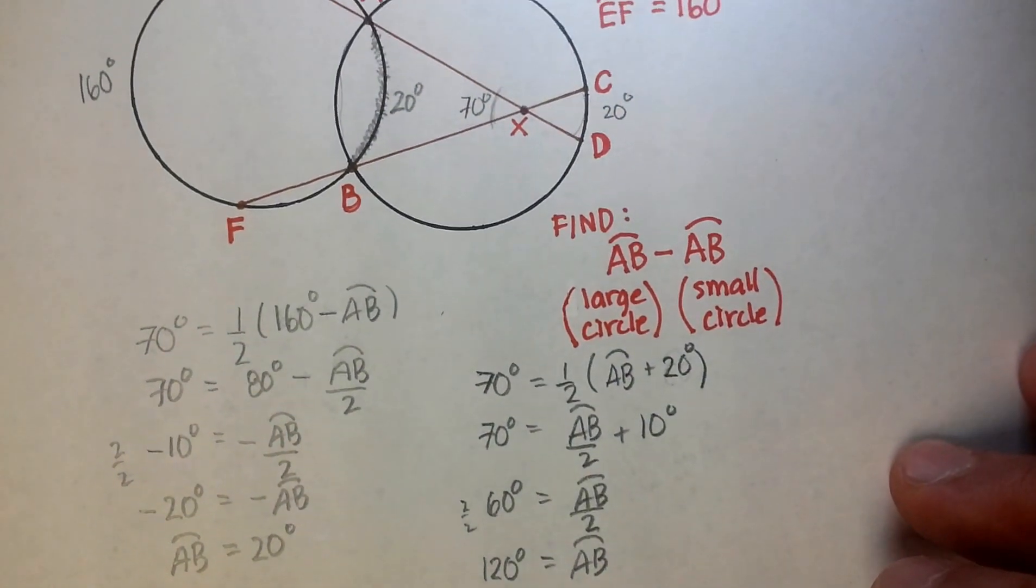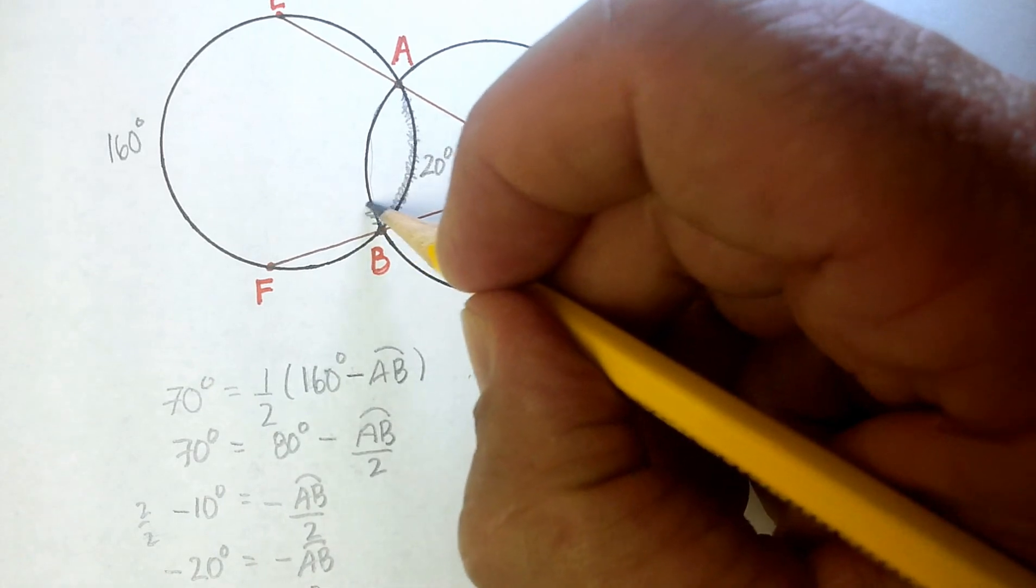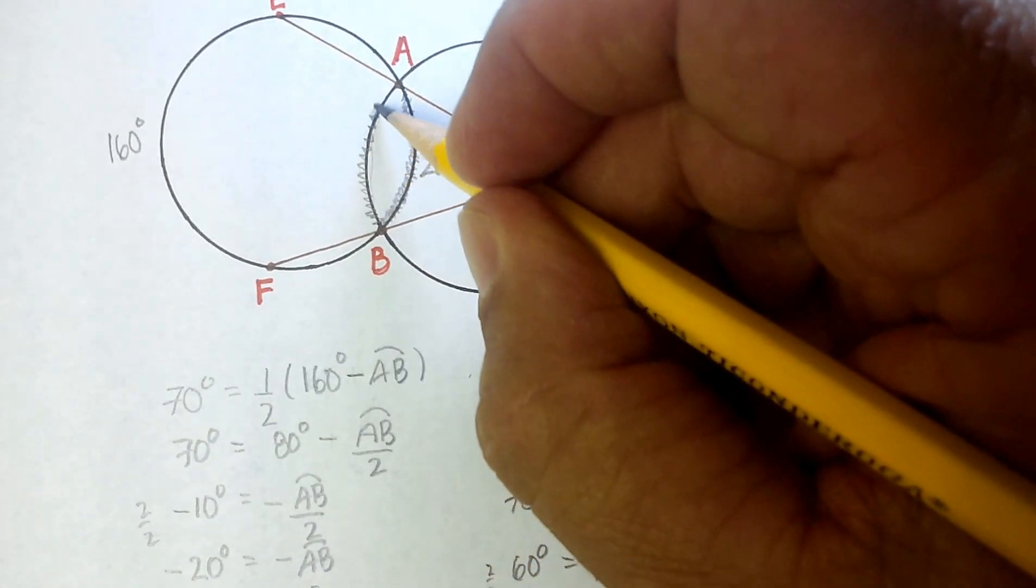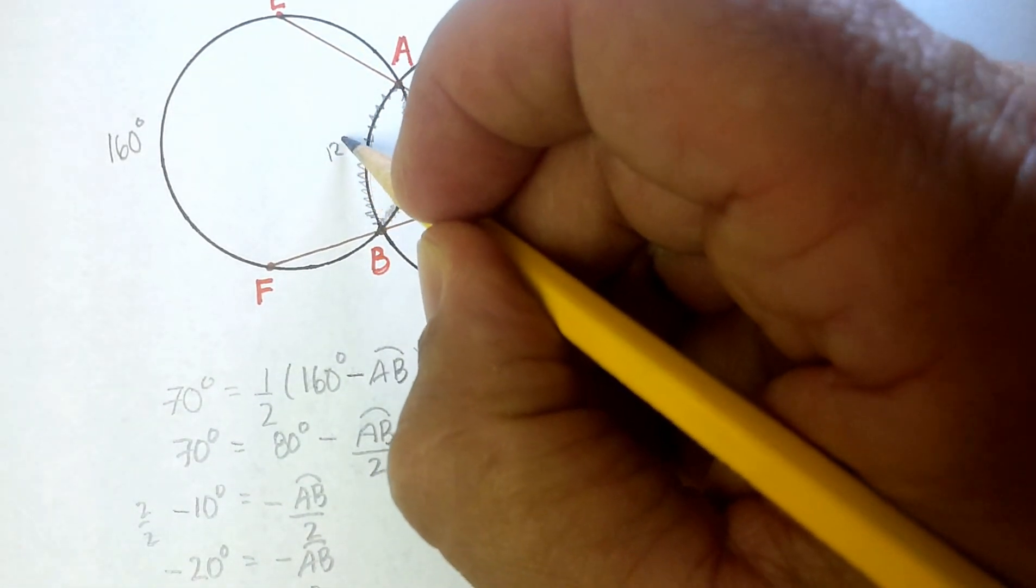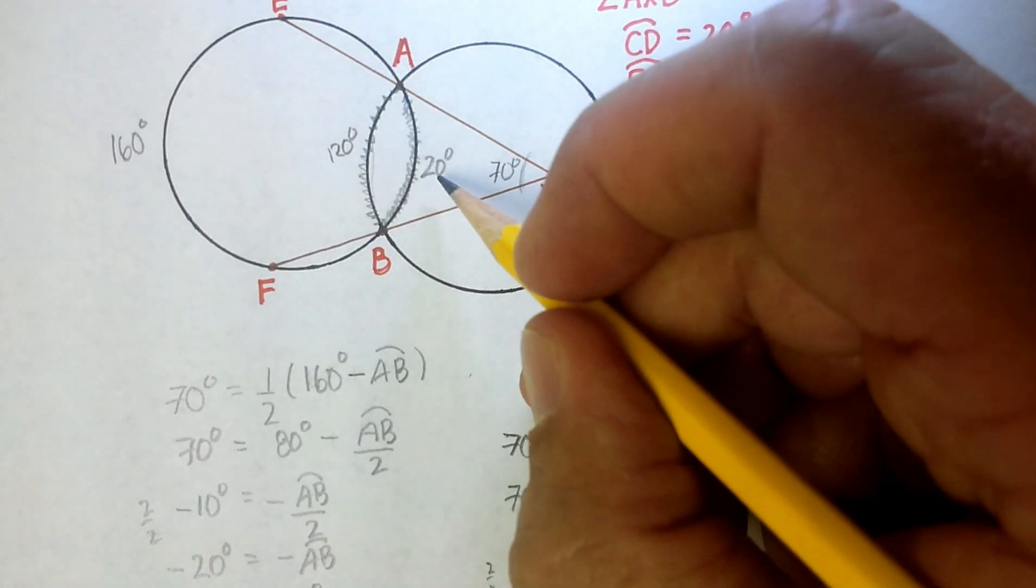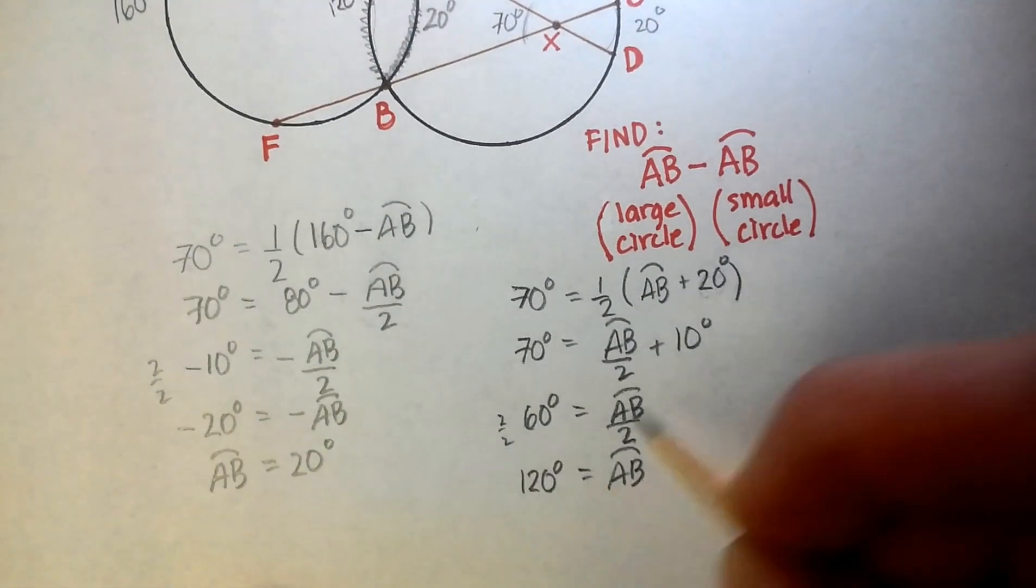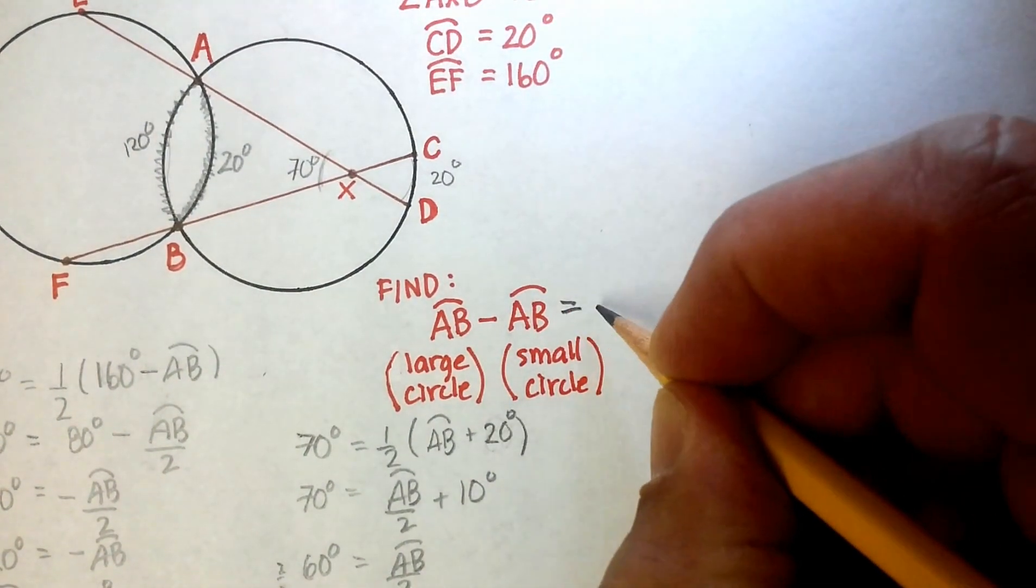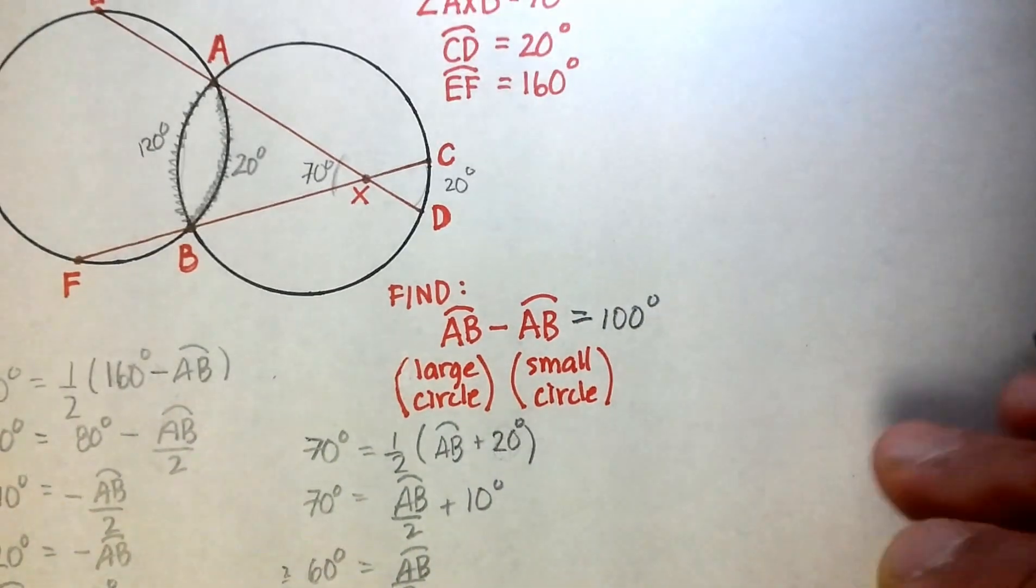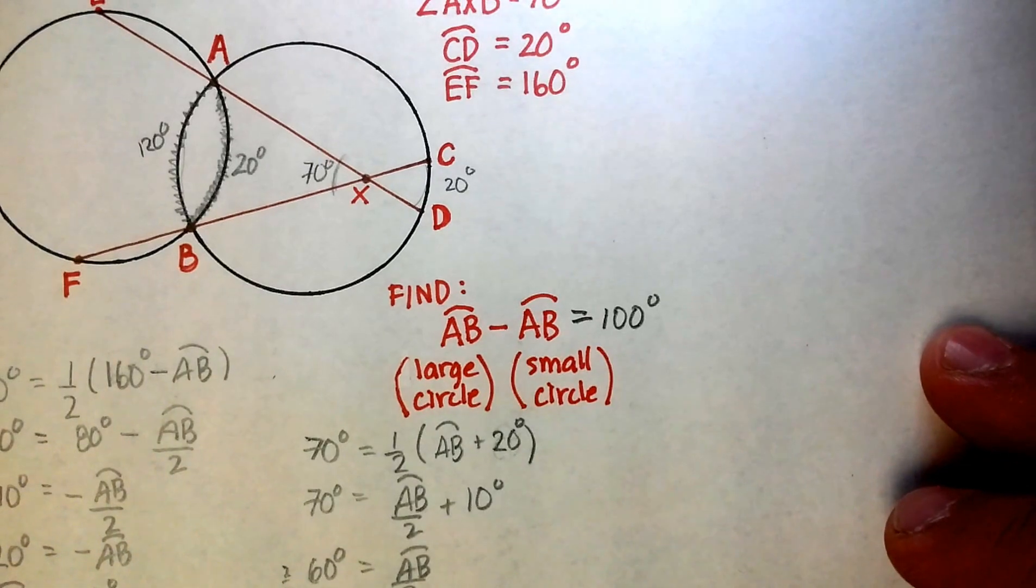Okay, now we've got our two arcs. This one is 120. This one is 20. 120 minus 20 will give us 100. And that should be the answer for this particular problem.